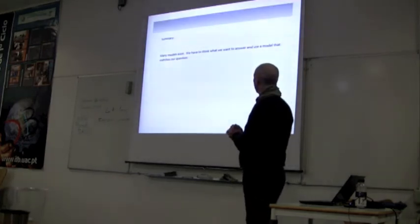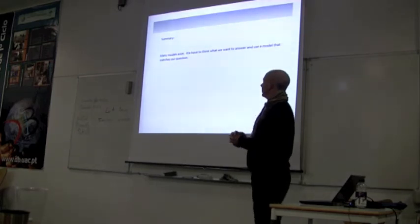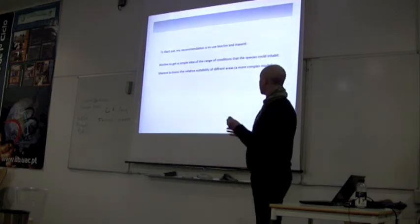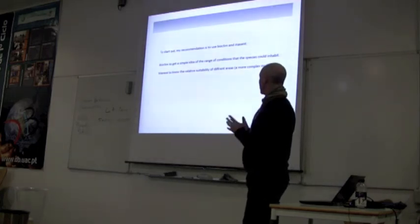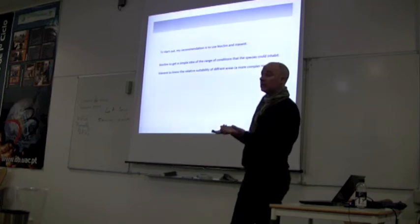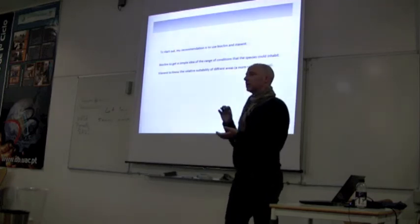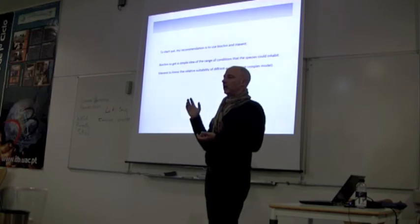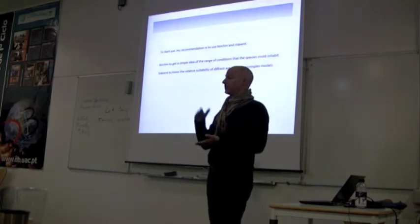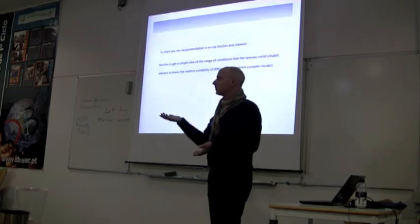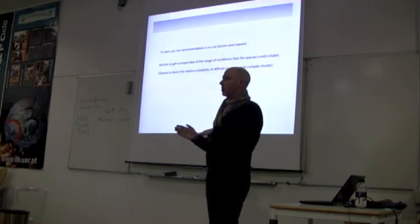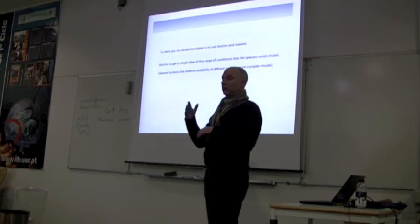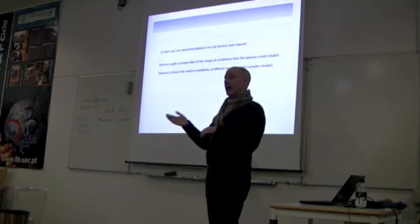So our summary is that many models exist, and you have to think about what you want to do, and you can use a model that answers your question. The recommendation is to start off something very simple and intuitive, like Bioclim, and maybe you have to think about it. But with MaxEnt, it's very important to this issue of model complexity, because you can get a very complex model if you put in a lot of variables, especially if you have a lot of features that allow you to make a very complex model, which is very prone to models that are overly likely to be fitting to noise in your data and any bias.